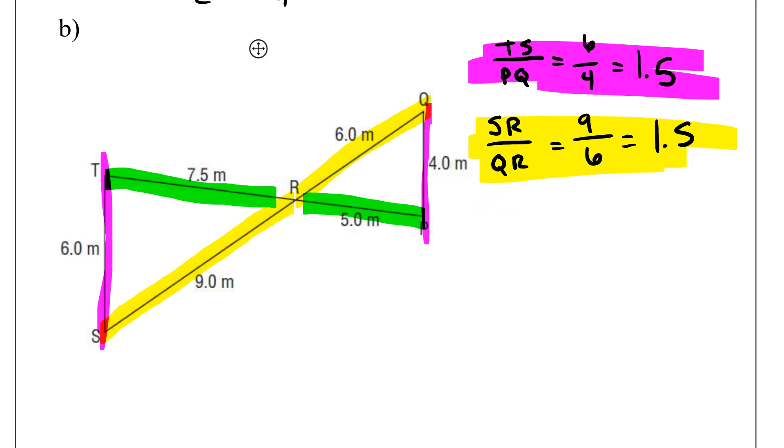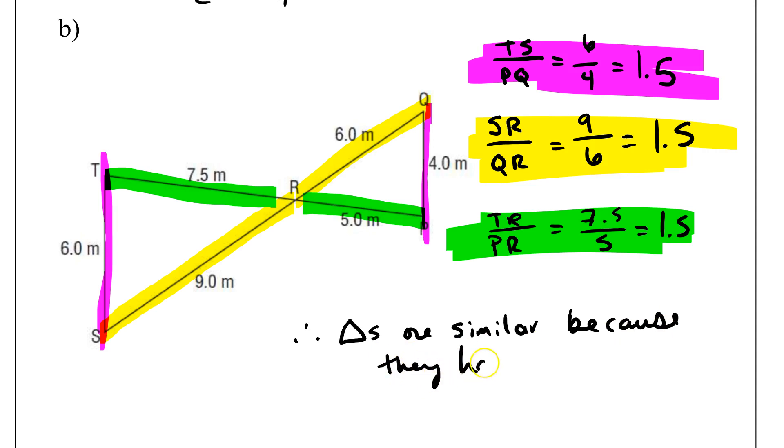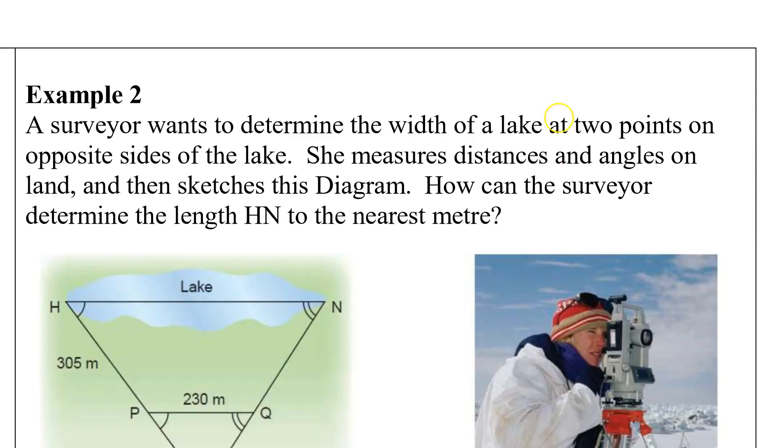Let's start out with the big one. We're going to say TR over PR is 7.5 over 5, which is 1.5. Triangles, therefore, triangles are similar because they have a consistent scale factor. Perfect.